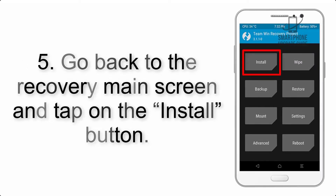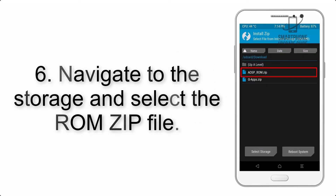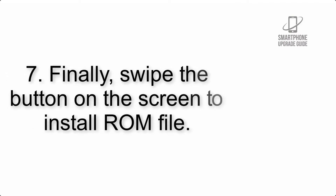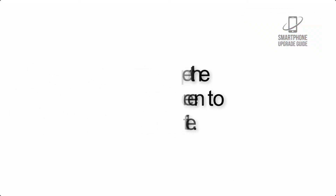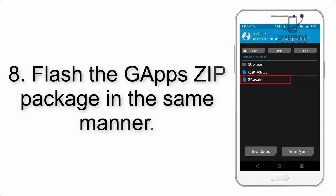Step 5: Go back to the recovery main screen and tap on the Install button. Step 6: Navigate to the storage and select the ROM zip file. Step 7: Finally, swipe the button on the screen to install the ROM file.